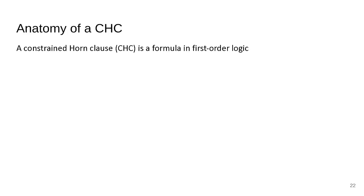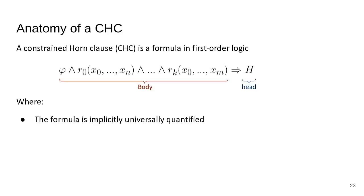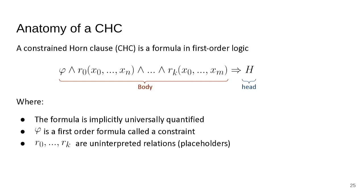Let's talk about some terminology of a CHC. The antecedent of the implication is called the body and the consequence is called the head. This formula is implicitly universally quantified. We call the symbol phi a constraint — it's just a simple formula in first-order logic.